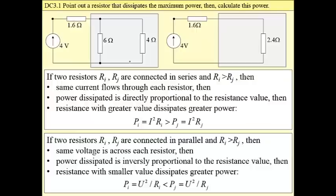If we have two resistors connected in series, if Ri is greater than Rj, then the same current flows through each resistor and power dissipated is directly proportional to the resistance value. Then resistance with greater value dissipates greater power.